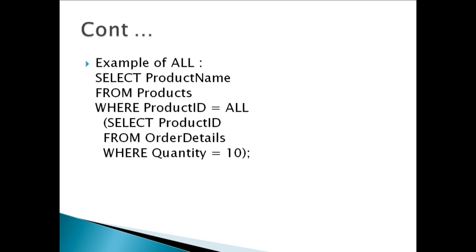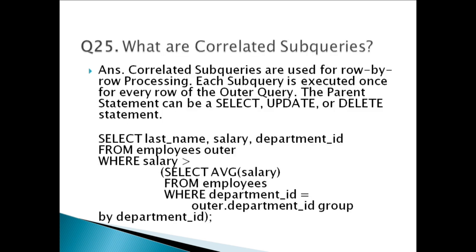For ALL, I have given an example where a subquery is also used. This SQL statement lists the product name if ALL records in the order details table have quantity equal to 10. This will return false because the quantity column may have different values, not only the value of 10.